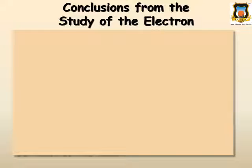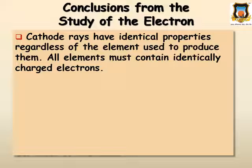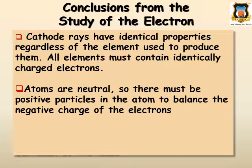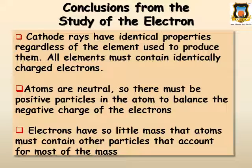Conclusions from the study of electrons: Cathode rays have identical properties regardless of the element used to produce them. All elements must contain identically charged electrons. Atoms are neutral so there must be a positive particle in the atom to balance the negative charge of the electrons. Electrons have so little mass that atoms must contain other particles that account for most of the mass.